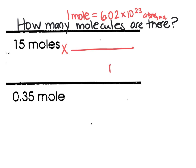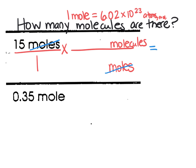Since we don't want moles anymore, we're going to put moles on the bottom so that moles cancels out and our answer will be in molecules. If you start with moles and put a unit of moles on the bottom, they cancel out and our answer is going to be in molecules, which is what we want. We know that one mole is equal to 6.02 times 10 to the 23rd molecules.